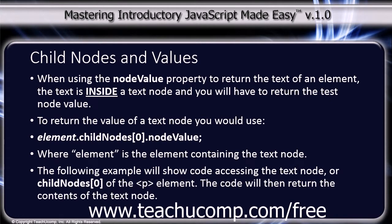The following example will show code accessing the text node, or childNodes[0], of the paragraph element. The code will then return the contents of the text node.